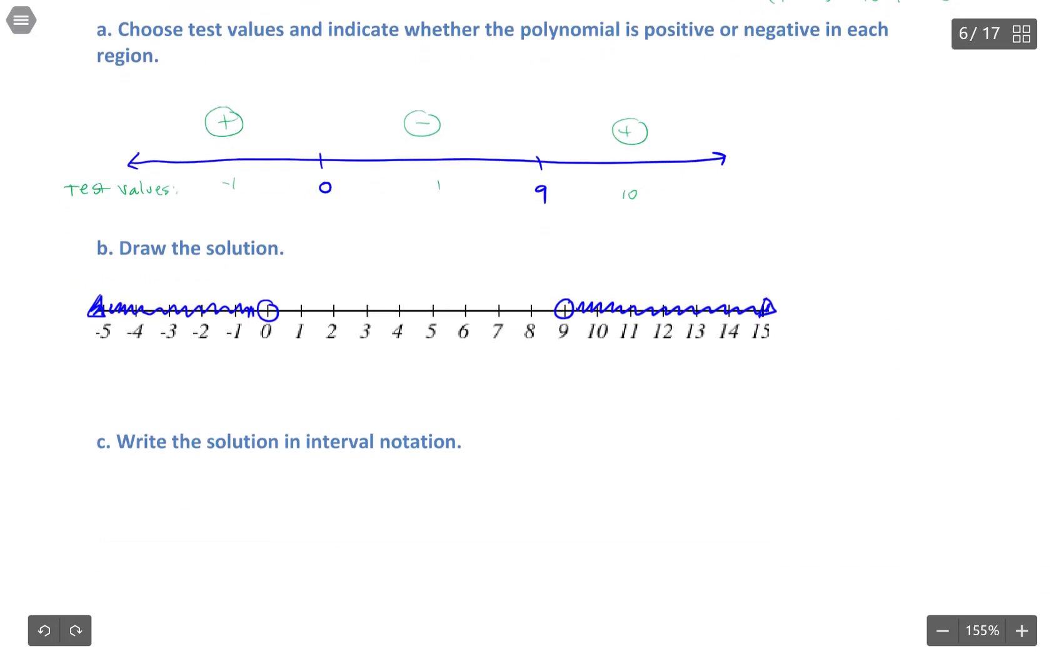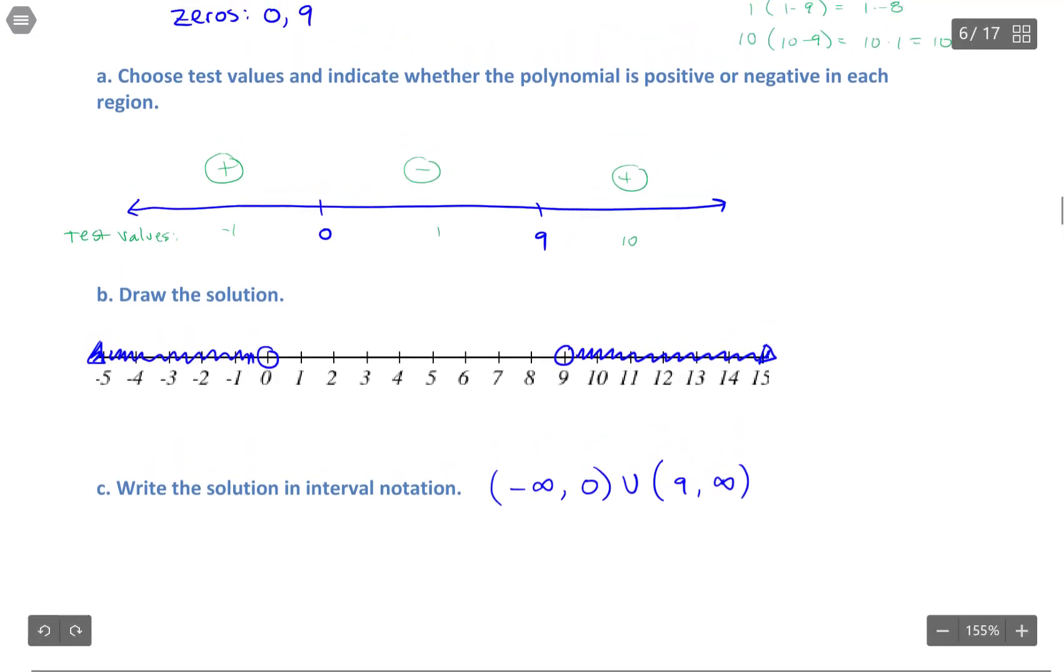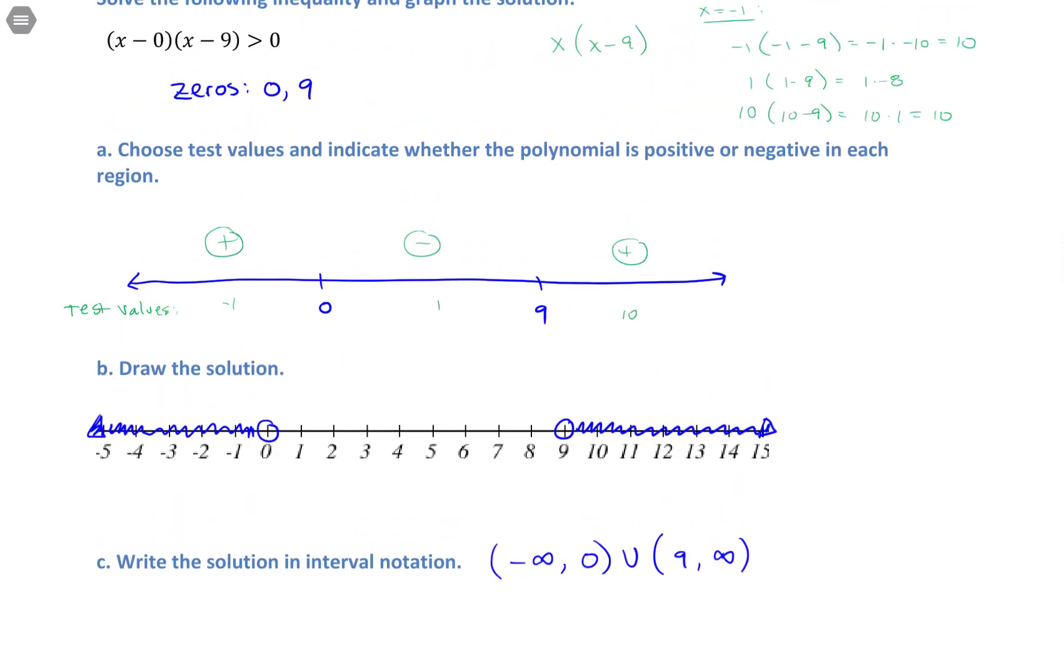So the solution in interval notation is all the values from negative infinity up to zero, but not including the zero, then from nine to positive infinity, and of course not including the nine either because of the greater than not being a greater than or equal to.